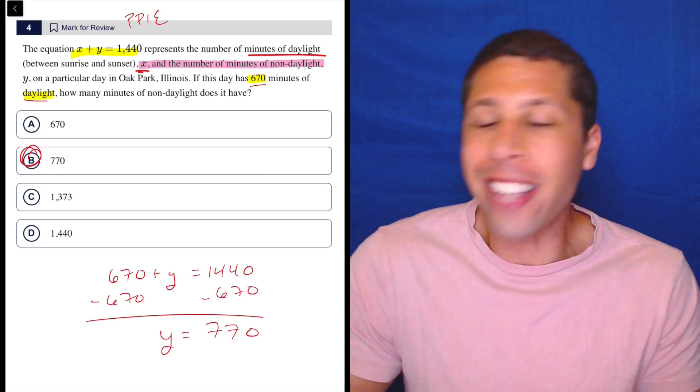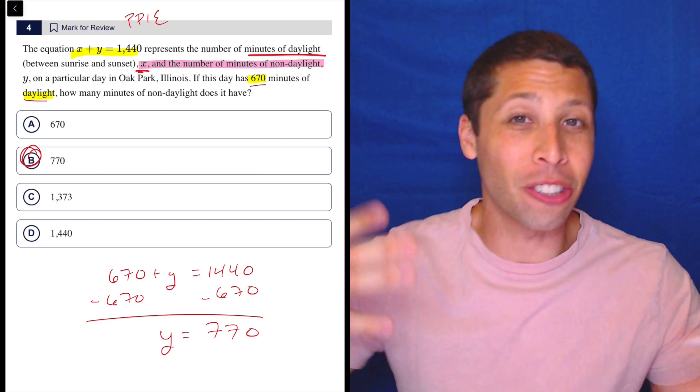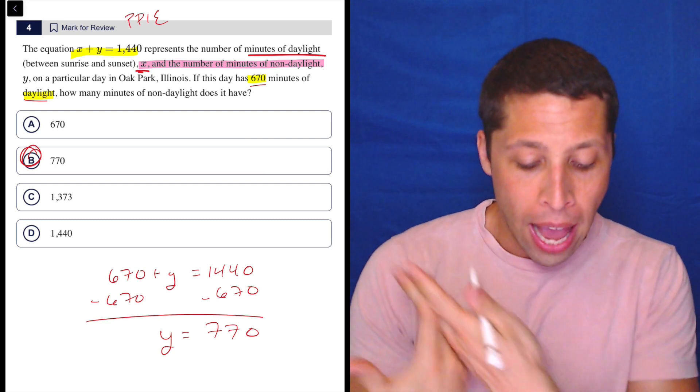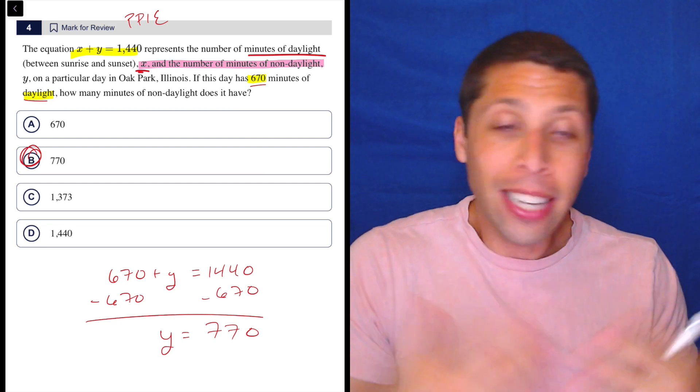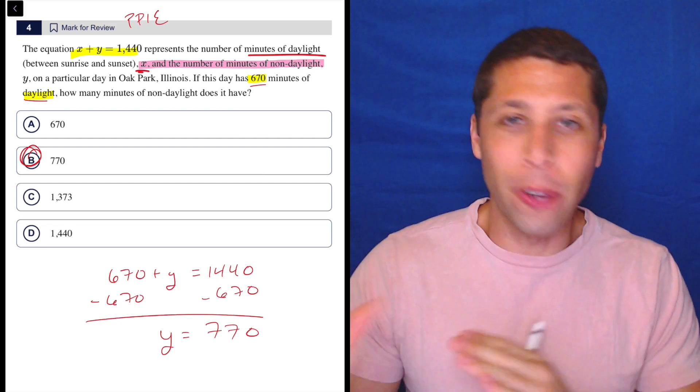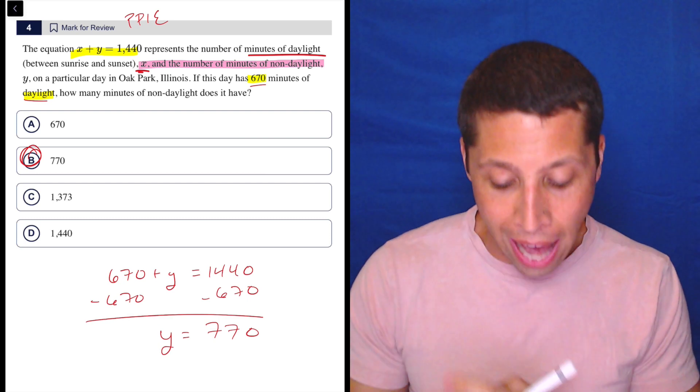there's the parentheses there, you're skimming, so you're gonna link it and just say, oh, X is the minutes of non-daylight. And again, in this case, it doesn't matter, because X and Y have no coefficients in front of them, so it's not gonna affect your answer if you did that.